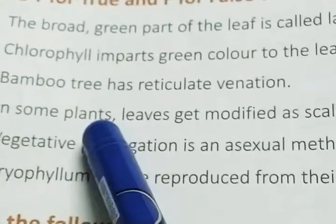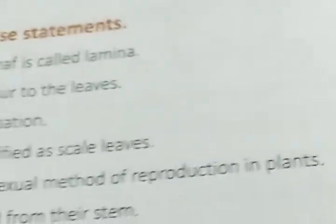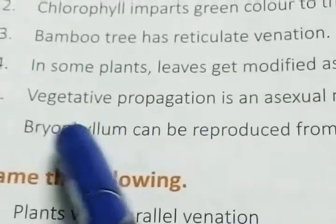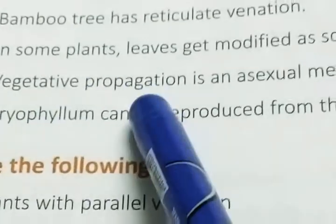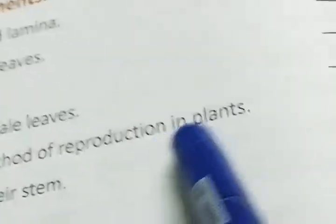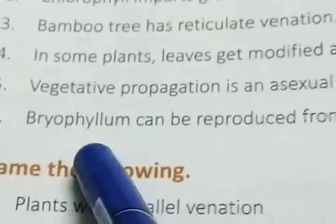In some plants, leaves get modified as scale leaves — answer will be true. Vegetative propagation is an asexual method of reproduction in plants — answer will be true. The last one: bryophyllum can be reproduced from their stem — answer will be false.